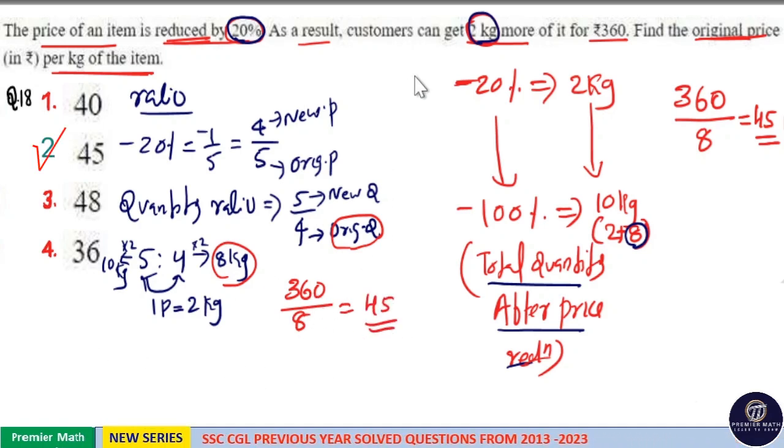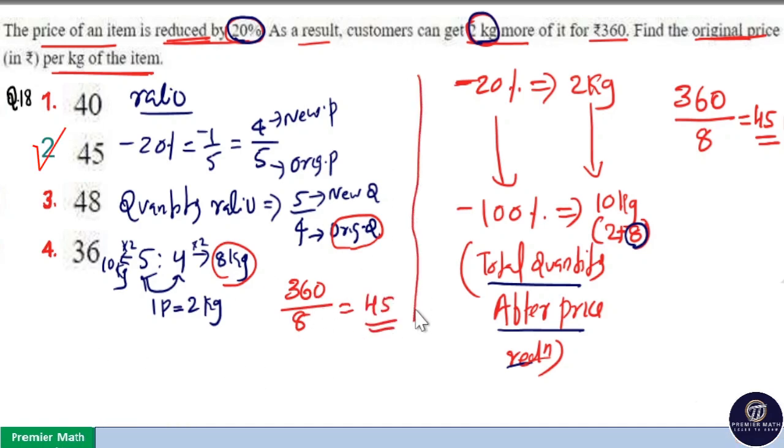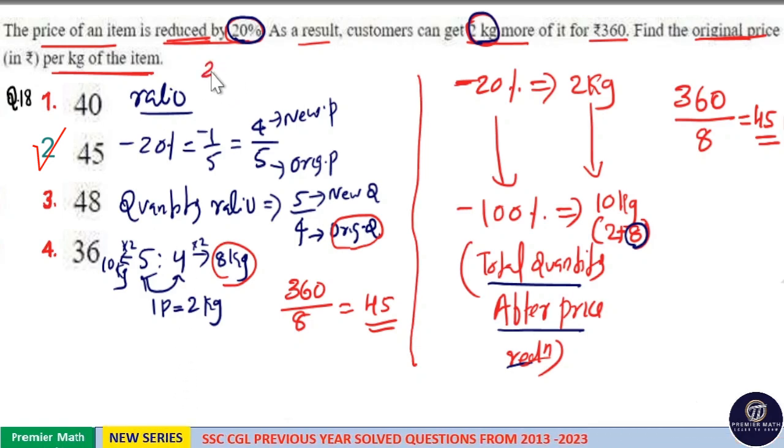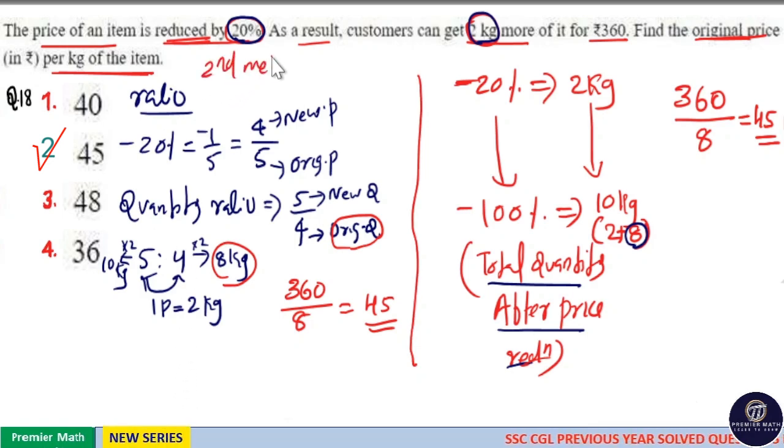So in this way you can also calculate. You have two methods. This is the second method. I think the first method is more simple.